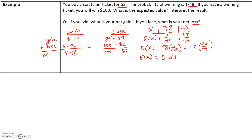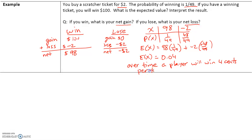Because it's positive, over time you will actually win some money. It may not be the first time or the second time, but if you play this a thousand times, on average you will win 4 cents for each ticket that you buy. The interpretation is that over time, a player will win 4 cents per ticket.